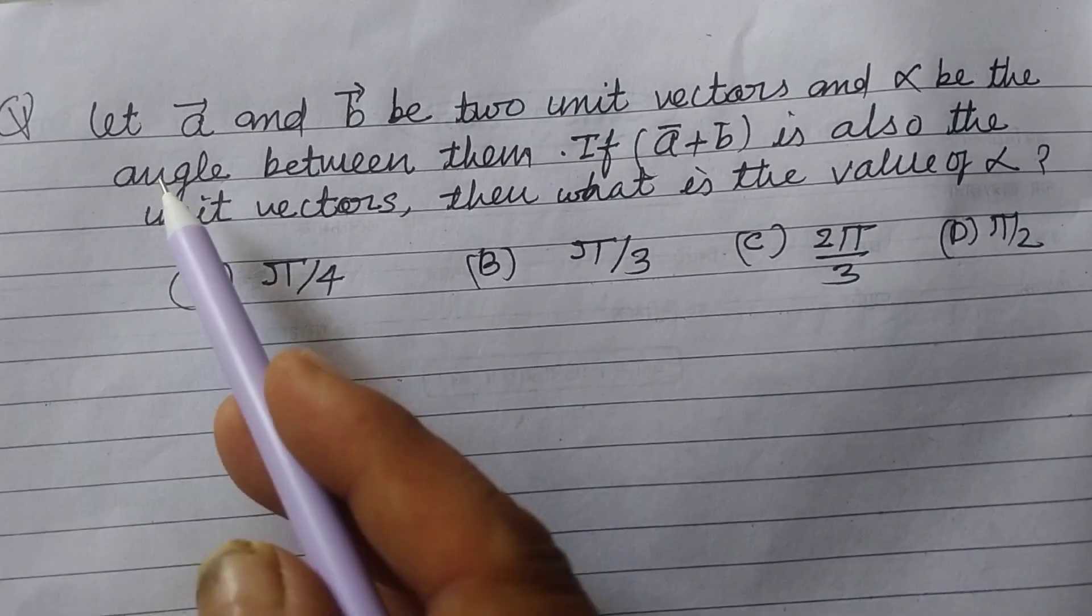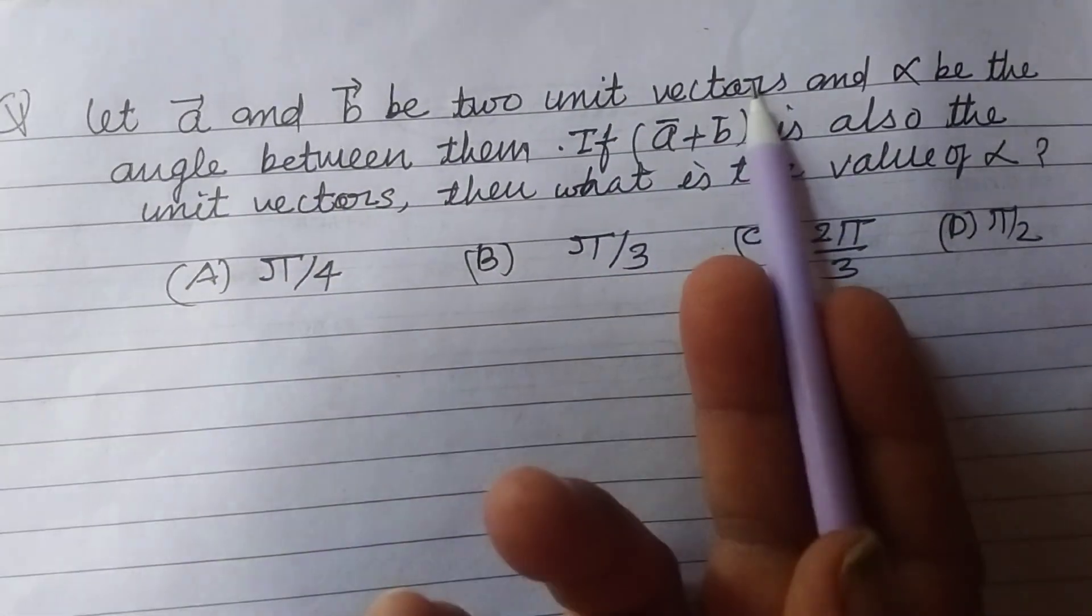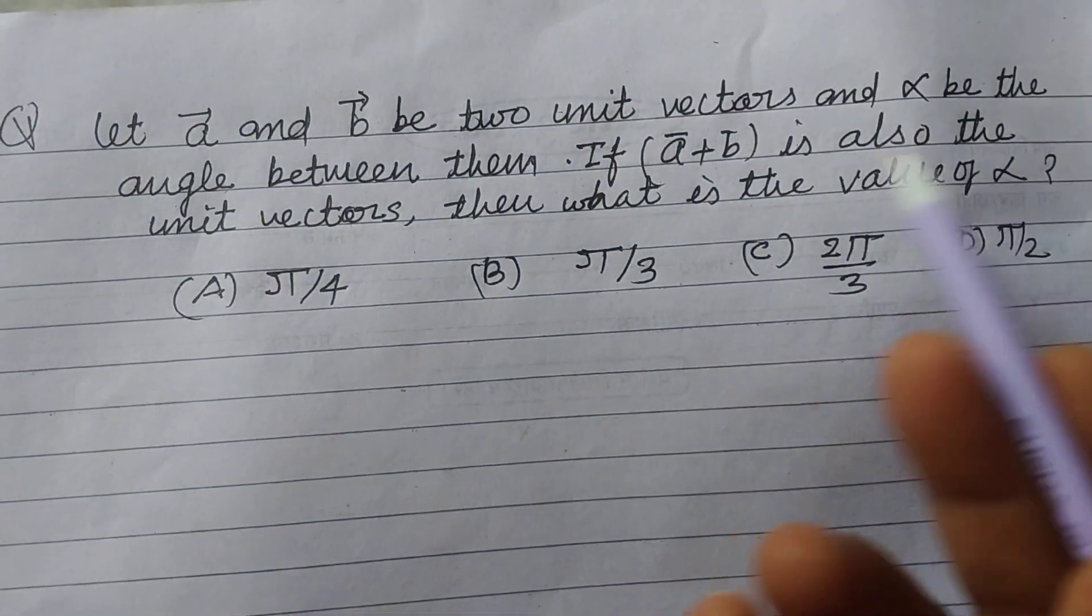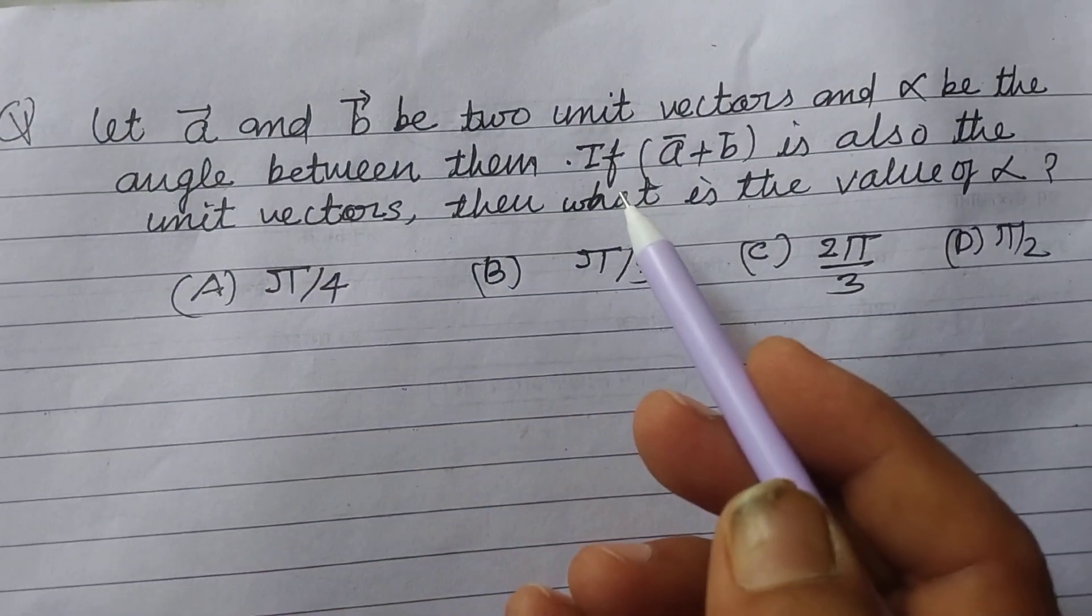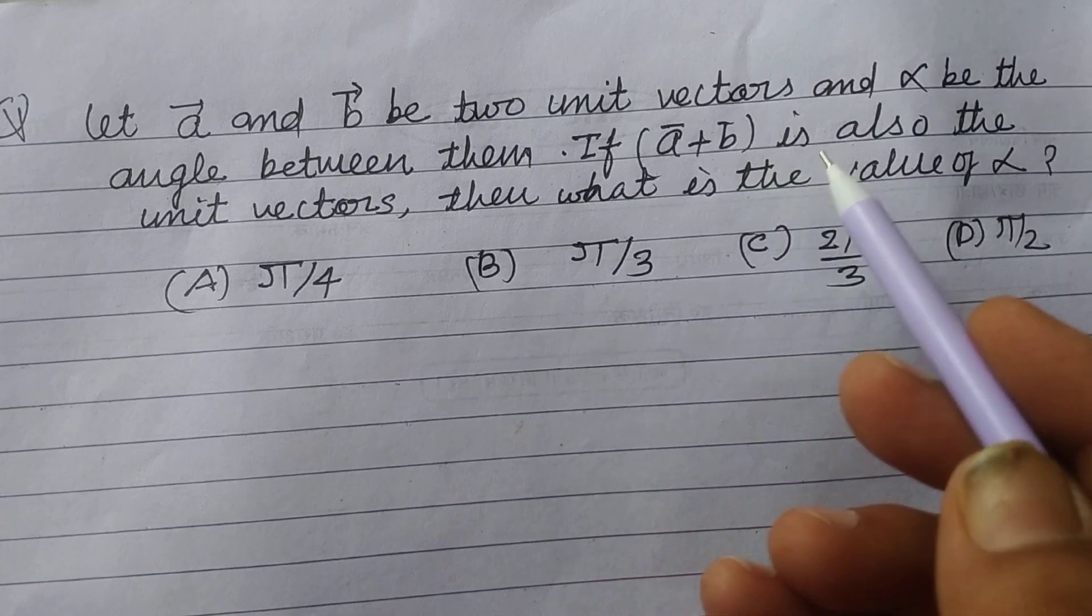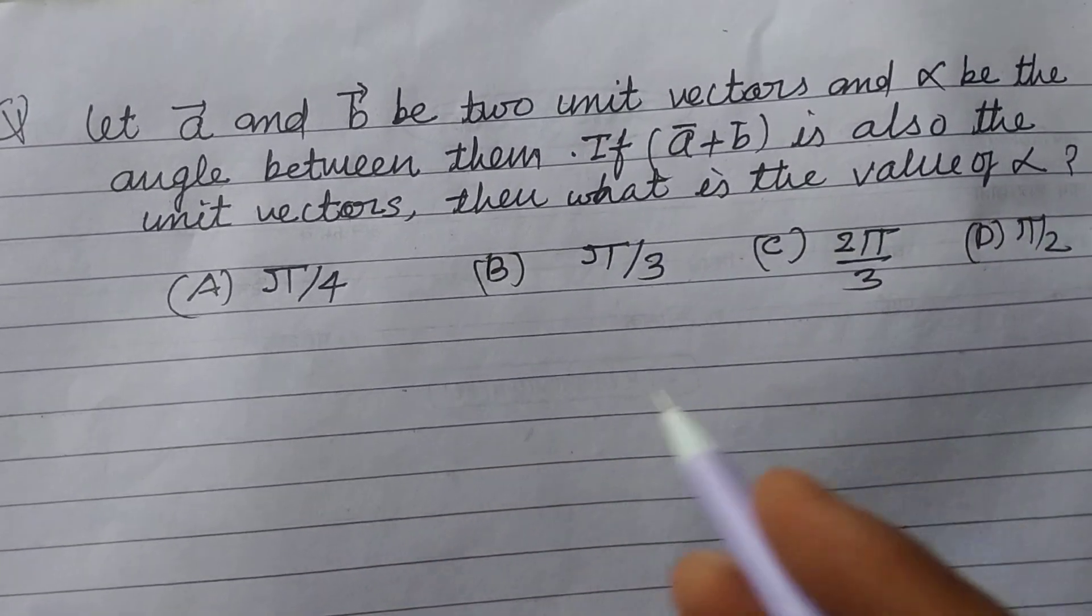Math vectors. Let A and B be two unit vectors and alpha be the angle between them. If A plus B is also a unit vector, then what is the value of alpha?